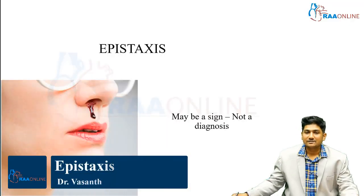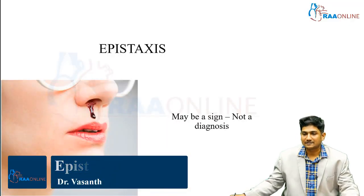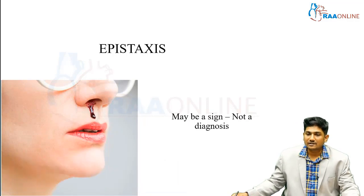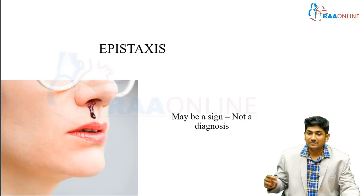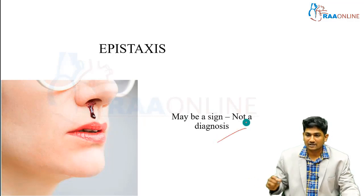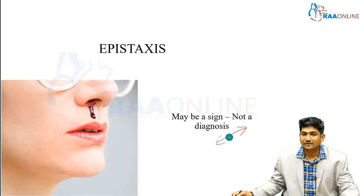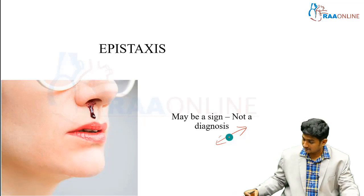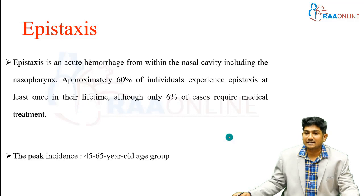Welcome to RAW Online. Today we are going to see an important topic: epistaxis, that is bleeding from the nose. What you need to understand is that it may be a sign and may not just be a diagnosis. If you can control the bleeding, we can't just be happy, because we need to know why the patient has actually bled. Epistaxis is an acute hemorrhage from within the nasal cavity including the nasopharynx.